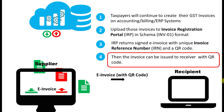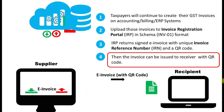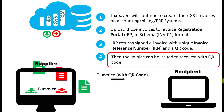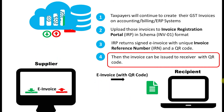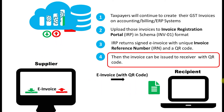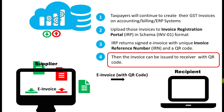In case the taxpayer is not using any accounting application or ERP system, they can upload invoice details using the offline utility. They can download the e-invoice in JSON format or print it as a PDF. There is an option to download, print, or send by email.